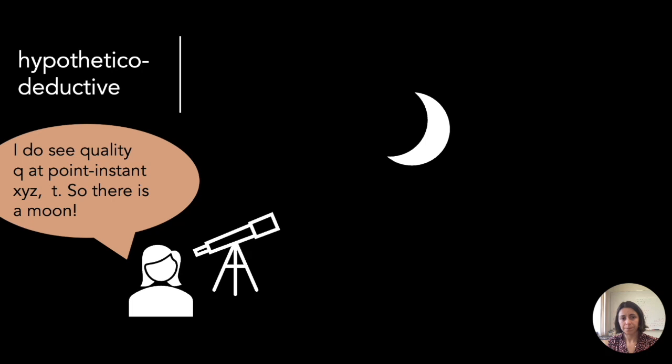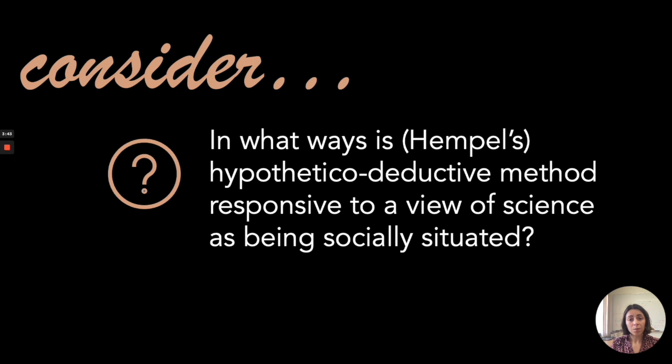That's the hypothetical deductive method in a nutshell — it may be reminiscent of the naive scientific method you learned in middle school: propose a hypothesis, test it, confirm it, or formulate a new one. We can consider: in what ways is Hempel's hypothetical deductive method responsive to the socially situated view of science, and how is it responsive to fact-gathering or Kantian idealism?